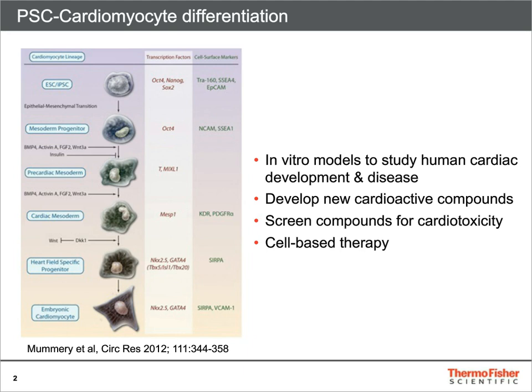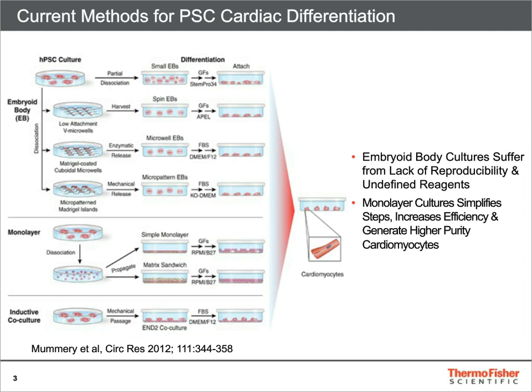During the differentiation of PSCs to cardiomyocytes, pluripotent cells are coaxed toward a mesoderm and ultimately cardiac phase through various transcriptional cues shown here on the left. Current methods for producing cardiomyocytes from PSCs are summarized here. There are many challenges to reliably producing PSC-derived cardiomyocytes. Inconsistent results can be a symptom of embryoid body methods due to increased labor, such as replating steps and variable reagents. Monolayer culture offers a seamless method from PSC culture to differentiation and is the preferred method for simplicity and efficiency.